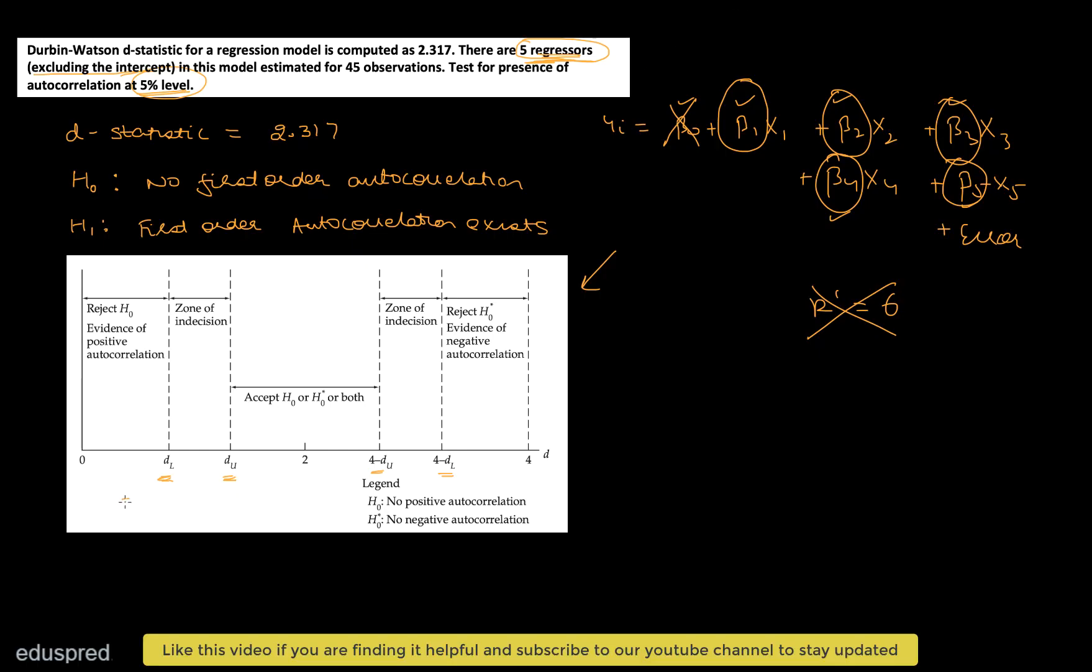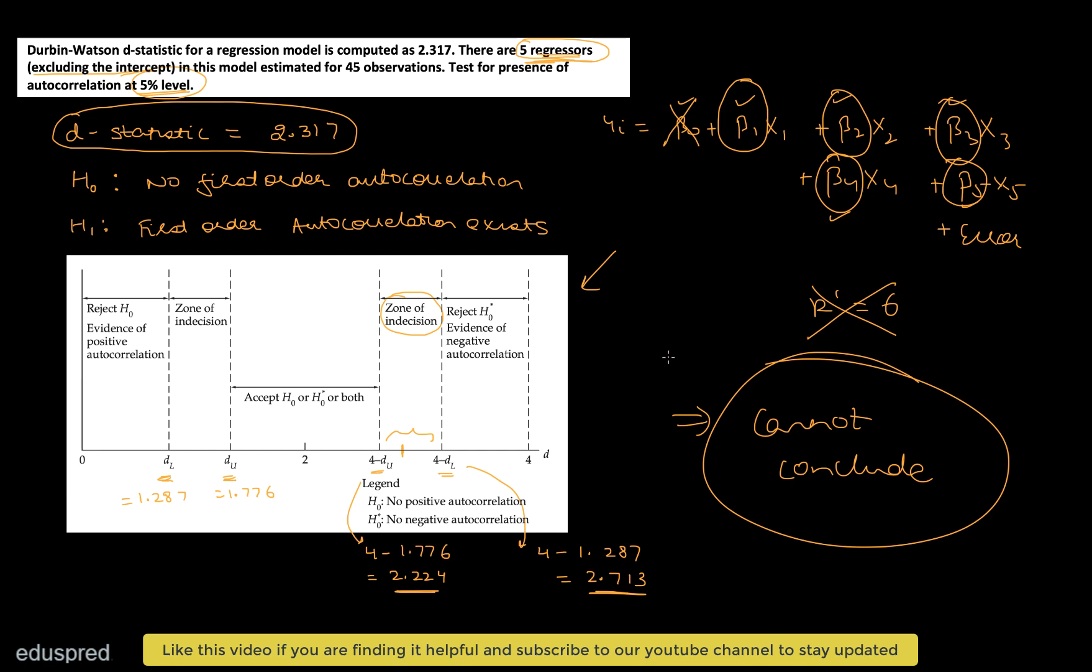So from the table, we got that DL is equal to 1.287 and DU is equal to 1.776. Over here, you have 4 minus DU. 4 minus DU means 4 minus 1.776, so this is equal to 2.224. And 4 minus DL means 4 minus 1.287, and this is equal to 2.713. So now we have all the values. We are given that D statistic is equal to 2.317. And 2.317 will lie somewhere in this zone, because 4 minus DU is 2.224 and 4 minus DL is 2.713. That means 2.317 will be somewhere between these two values. That means you're going to lie in this zone of indecision. This implies that we cannot conclude whether or not autocorrelation exists at the 5% significance level. And that's it for this question.